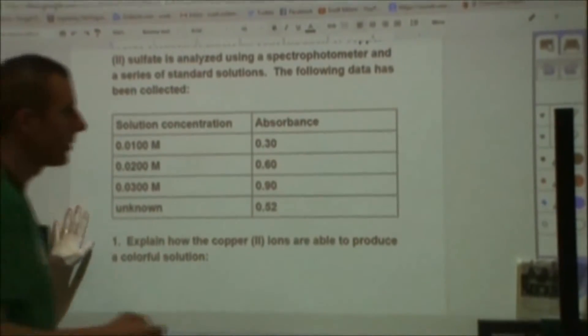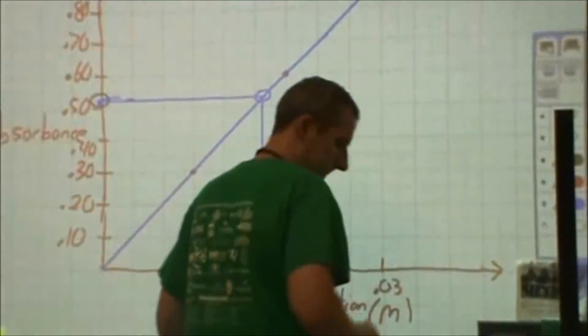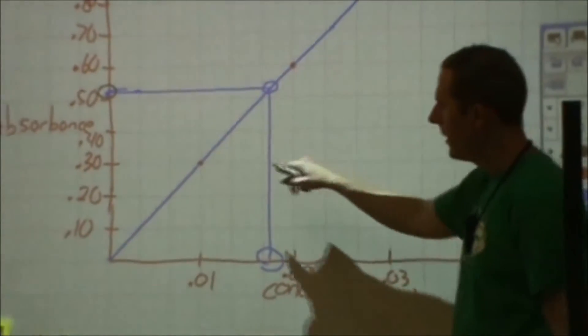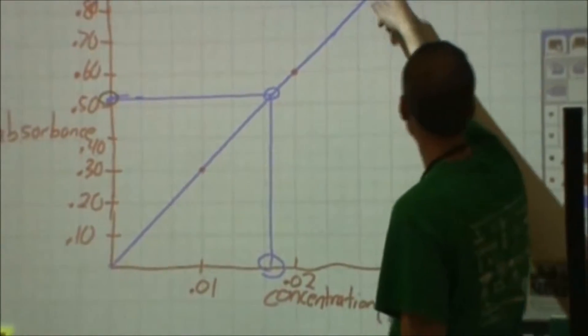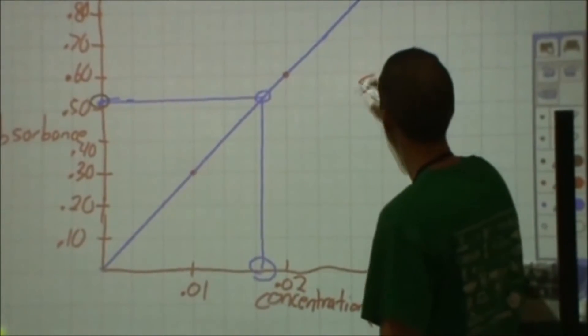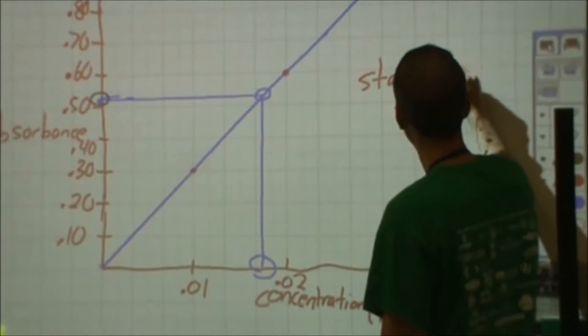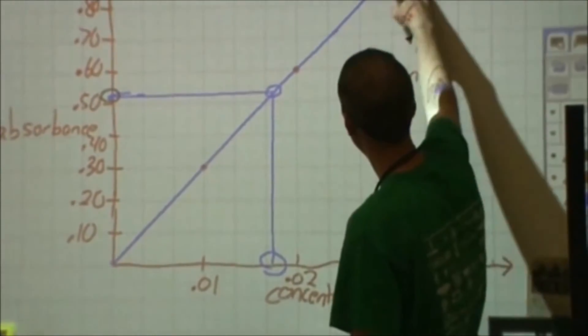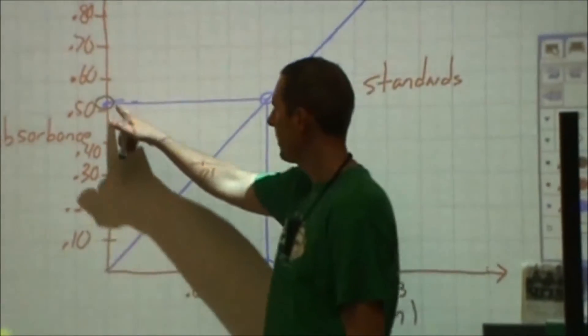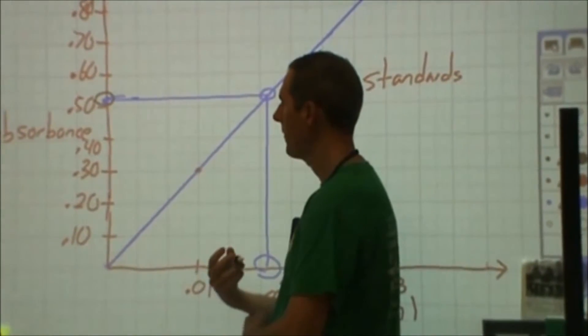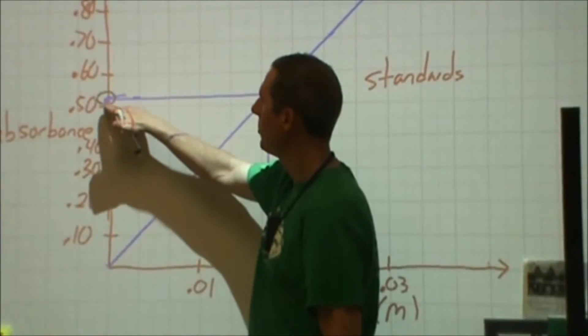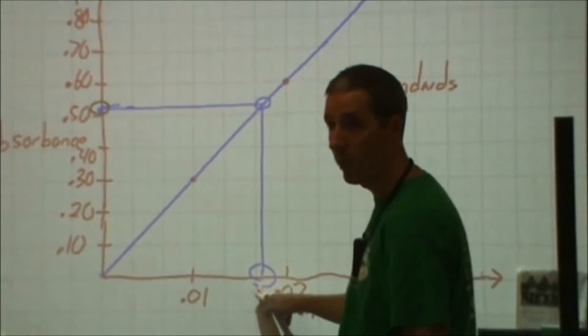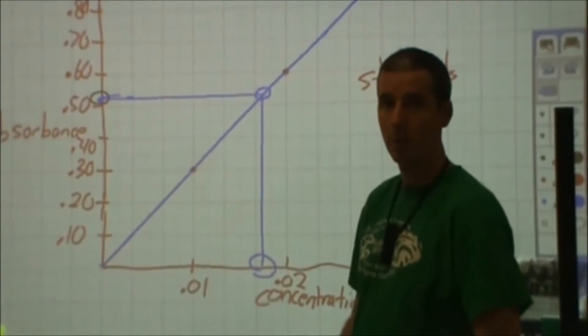I've already done that over here. In red here, you can see the three data points. Those are my standard solutions. And they're very linear. So I got a really easy line of best fit to draw. I used a ruler. Then I put my absorbance up for what my unknown was. It was 0.52, a little under halfway between 0.50 and 0.55. I traced that over to the line. I traced that down to here. And then I found my concentration.